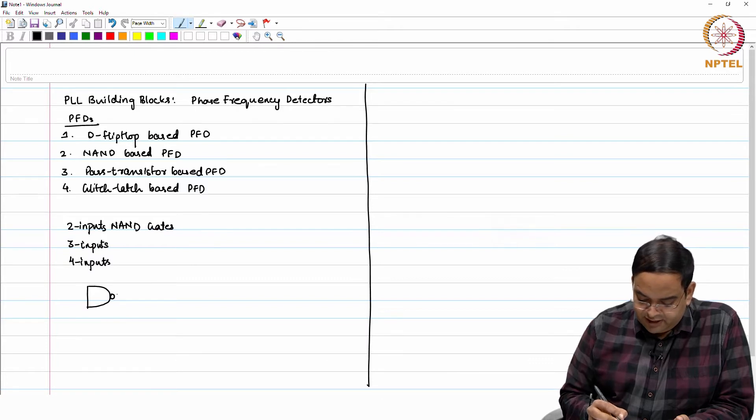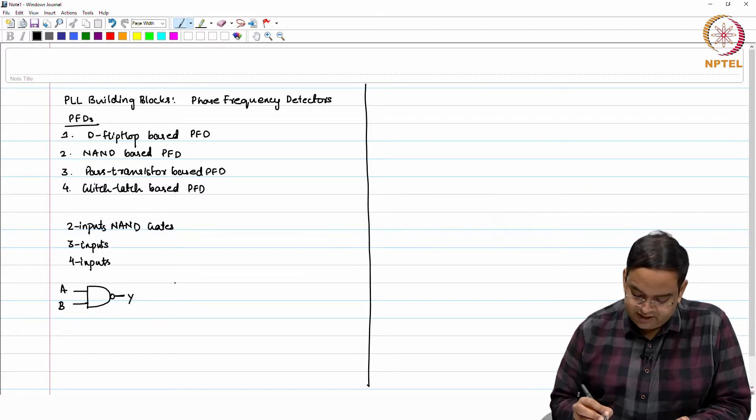For example, if you have a NAND gate like this: A and B and the output is Y. Let's say A is 1 and B is also 1, and A makes a transition like this.